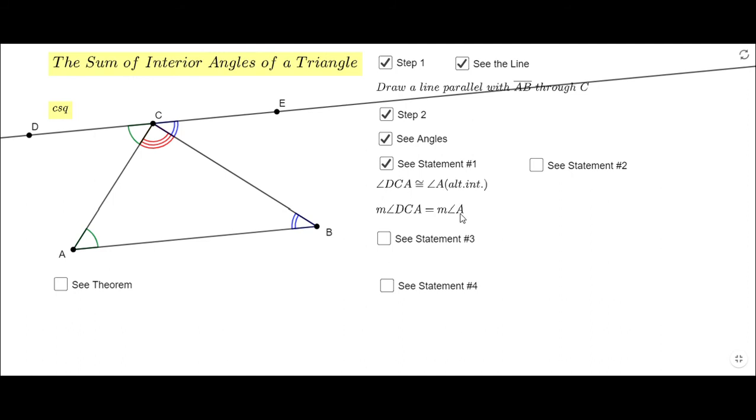Similar, I can click here and see statement two, and you notice now these two angles are congruent: ECB and angle B, because they are alternate interior, so obviously they have the same measure.